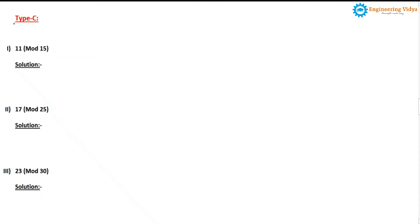This is a problem of type C. In type C we have to solve a total of 5 problems. Before solving the problems of type C, let me explain one rule of modular arithmetic — with the help of that rule we can solve this kind of problem. The rule says that if you have a mod of m, where the first operand is a and the second operand is m, and you need to calculate a mod m.